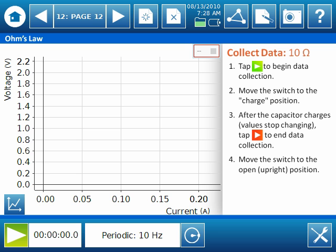We're all set up to collect data, so let's take a look at what that will look like by following the instructions on the right. First, I select the green start button to begin data collection. Then I move the switch on the charge-discharge circuit board as the instructions indicate. Once the capacitor is nearly fully charged, I will select the orange stop button to stop data collection.